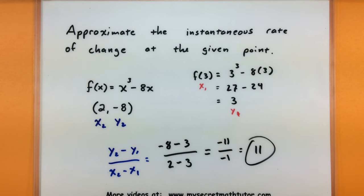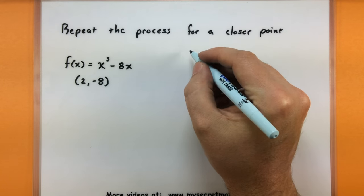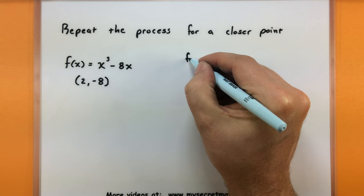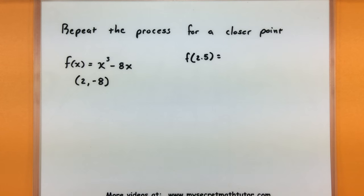Now we want to keep that in the back of our mind and essentially just repeat this process for something even closer. So we did that for the point at x equals 3. Now let's see what happens if we choose something even closer to 2. Let's choose it at 2.5.